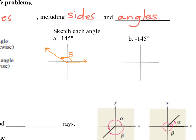For negative 145, we again start with our initial ray on the right-hand side, but now we count in a clockwise direction. Negative 90 is straight down, and negative 145 would be down in quadrant 3. So even though the numbers are the same, positive and negative 145 end up in different locations.